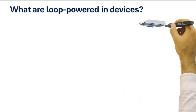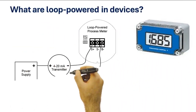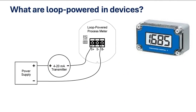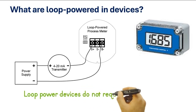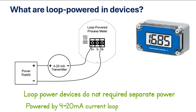What are loop powered devices? Loop powered devices are electronic devices that can be connected in a transmitter's 4 to 20 milliamperes current loop. Loop powered devices do not require any separate power source; they are powered by the current loop itself.